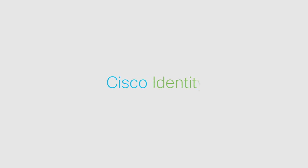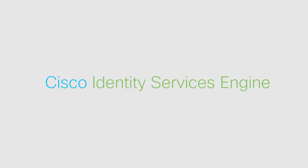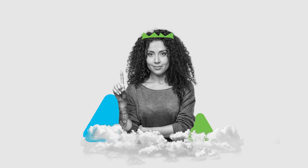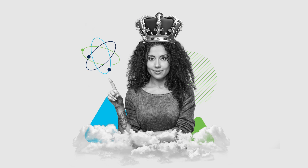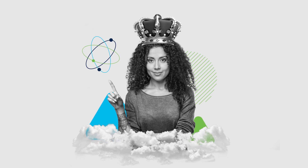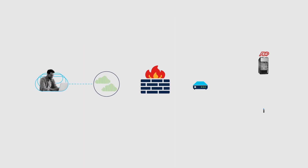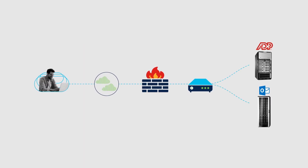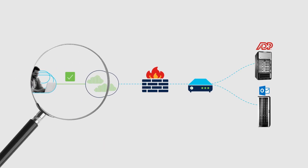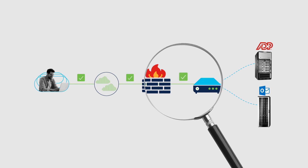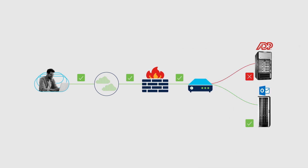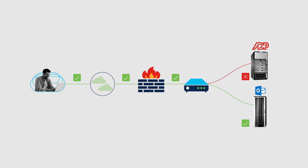Well, if you've got Cisco Identity Services Engine, or ISE, you've already got one of the greatest policy enforcement tools at your disposal. ISE gives unprecedented visibility into your network, identifying and profiling every connection point and verifying its posture.